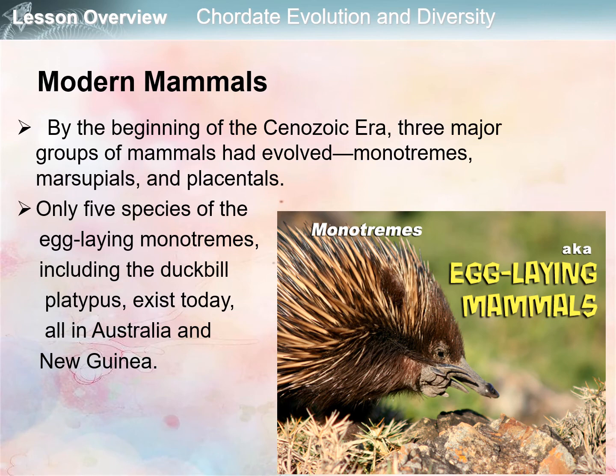By the beginning of the Cenozoic era, three major groups of mammals had evolved: monotremes, marsupials, and placentals. These three groups differ in their means of reproduction and development. Only five species of egg-laying monotremes exist today — including the duck-billed platypus — all in Australia and New Guinea.